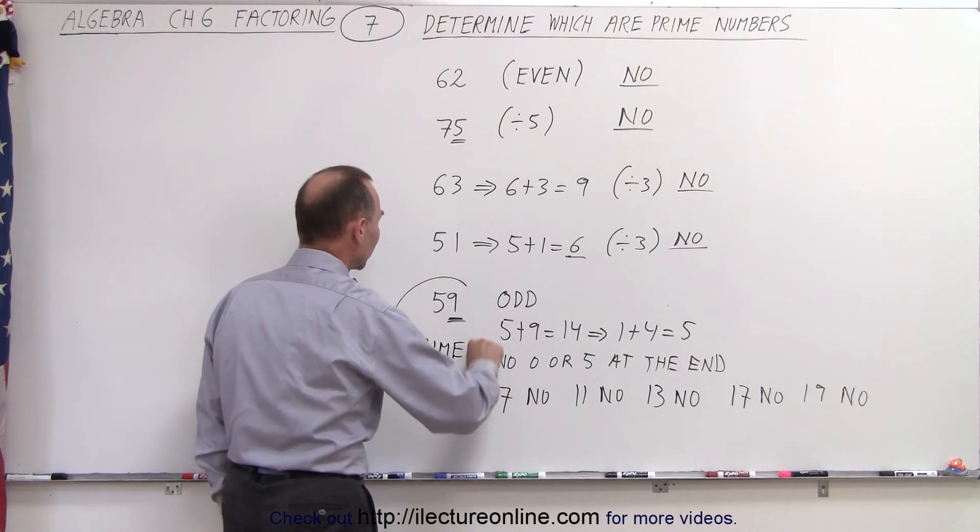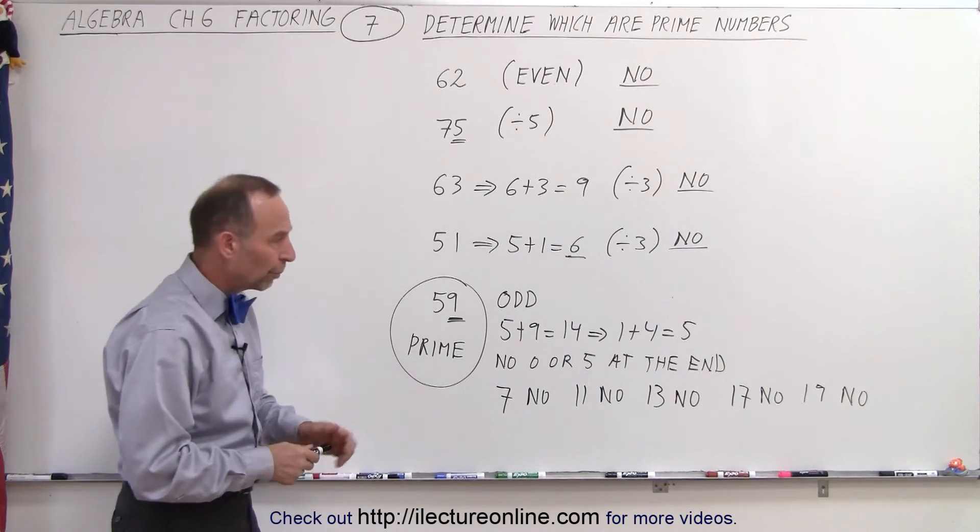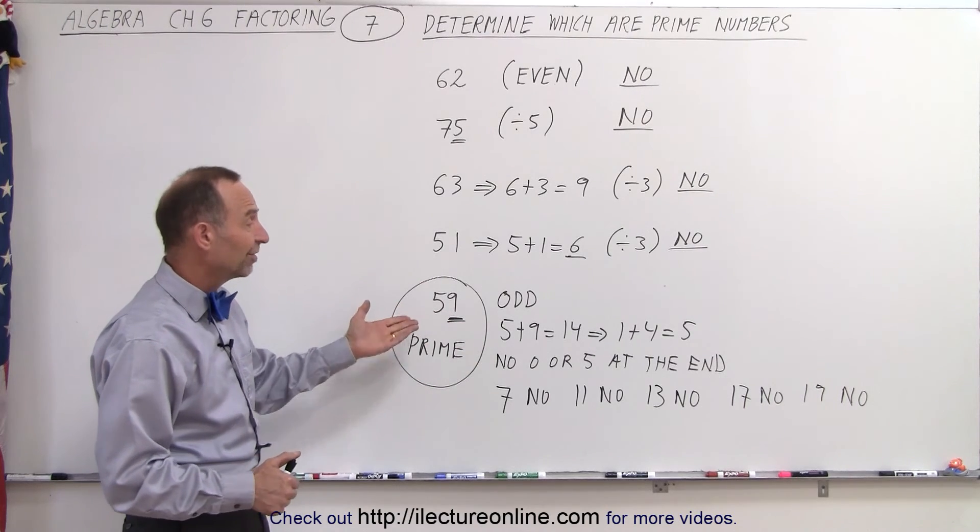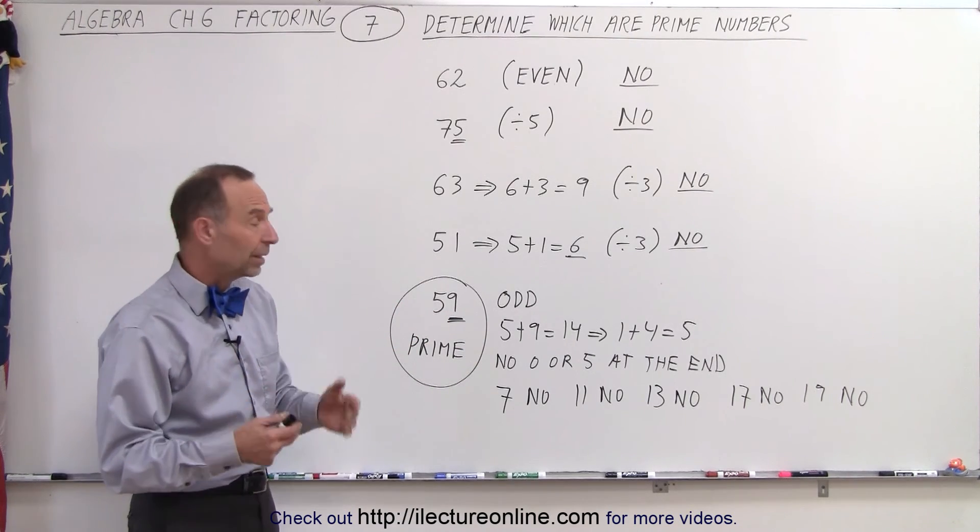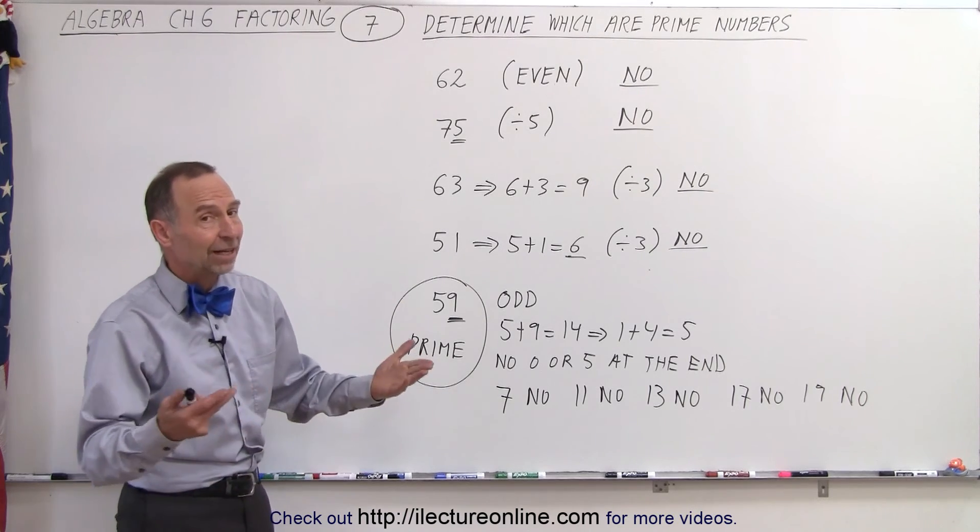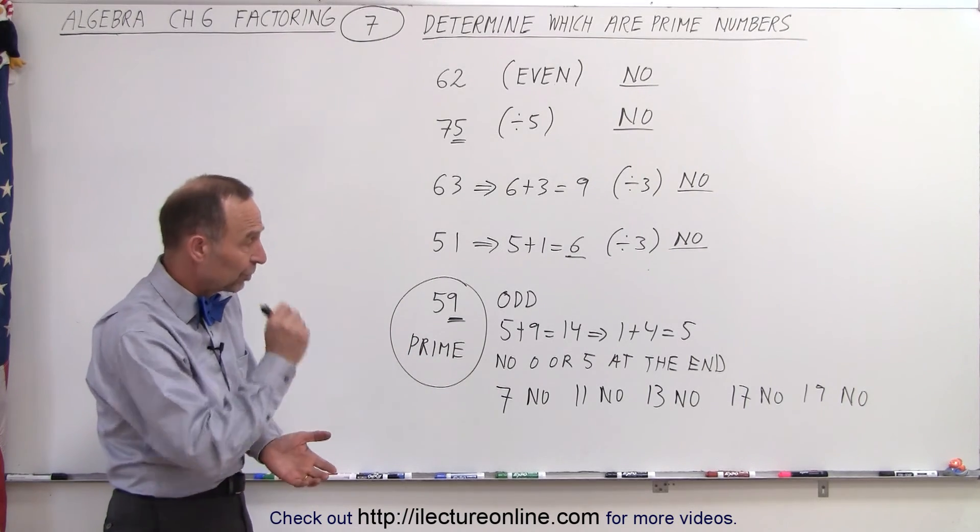And that's kind of the methodology that you use. Why did I go beyond 19? Well, at this point, I know that 3 times 19 is 57, so the only other possibility would be to come up with a number that would be about half of this, and since 59 is an odd number, you can't. So you're done.